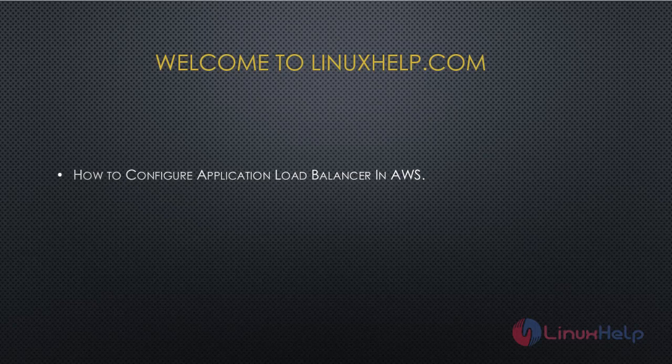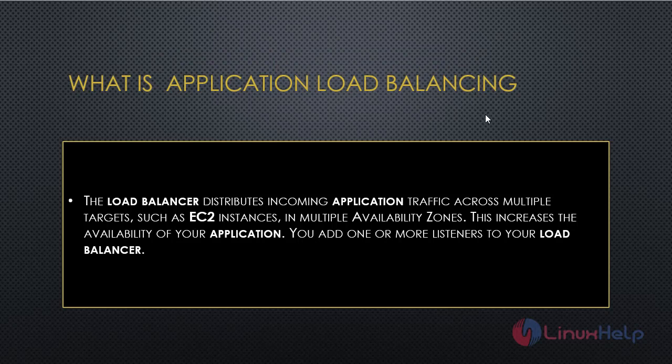Welcome to linuxhelp.com. Today I will show you how to configure an Application Load Balancer in AWS, and we'll also see the concept behind it — how it works and how it performs. The load balancer distributes incoming application traffic across multiple targets such as EC2 instances in multiple availability zones, which increases the availability of your applications. You add one or more listeners to your load balancer.